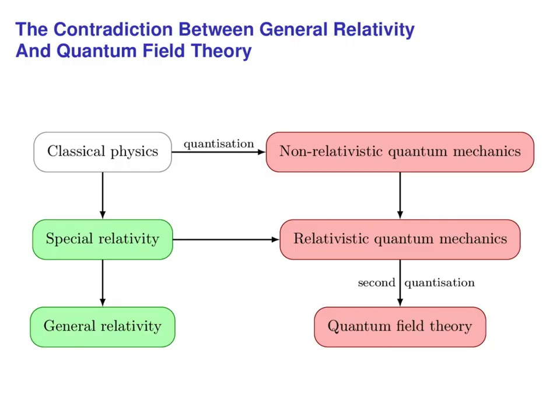Let us start by recalling the various meanings of quantization. First quantization takes us from classical mechanics to quantum mechanics, and second quantization takes us from quantum mechanics to quantum field theory. The combination of relativistic quantum mechanics with general relativity is still possible using the spin connection. The incompatibility only consists between general relativity and quantum field theory.